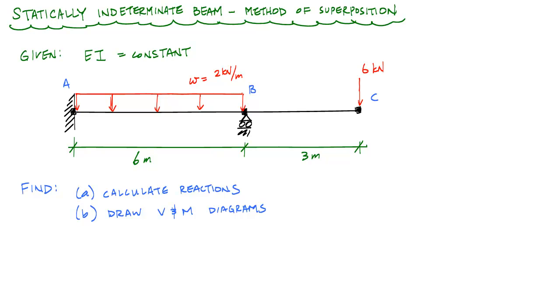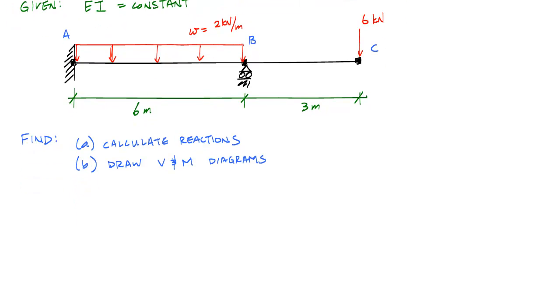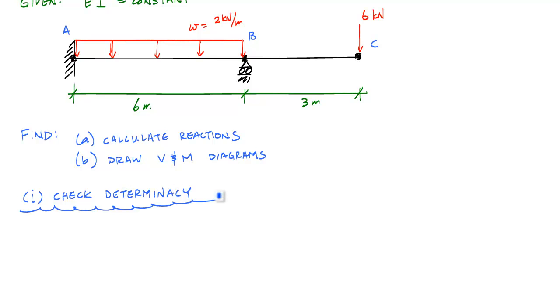The first thing I want to do in this problem is check the determinacy. The way I'm going to do that is a simple technique - I'm just going to compare reactions to the number of equilibrium equations I have. It typically works for beams, as long as you don't have hinges or some other conditions. But in general, for a first course in mechanics, this comparison of number of reactions and number of equilibrium equations is enough.